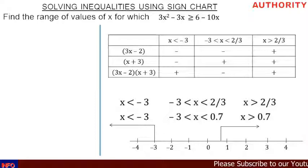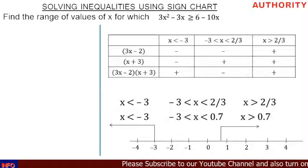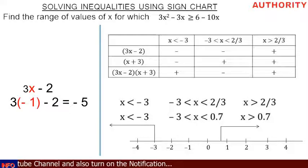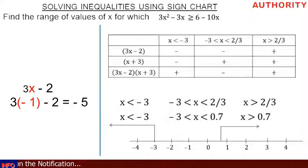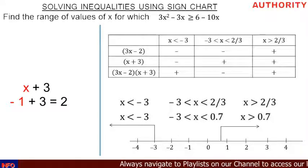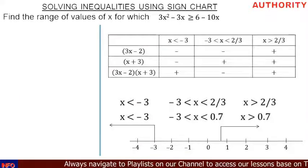For the second range, x between minus 3 and 2 over 3, let's pick minus 1. Placing minus 1 into 3x minus 2: 3(−1) − 2 = −3 − 2 = −5, which is negative. Placing minus 1 into x plus 3: −1 + 3 = 2, which is positive. So under the product: minus times plus equals minus. The product is negative in this range.